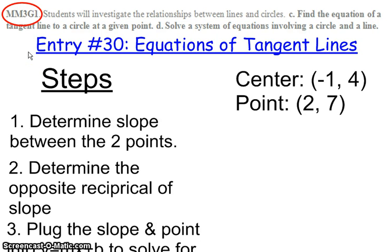All right, for today's video, we are talking about how to find equations of tangent lines of circles. Our standard we're working on today is MM3G1. In particular, we're working on parts C and D. We're finding equations of tangent lines to the circles at a point, and we're talking about how to solve a system of equations involving a circle and a line. Now, I know this one says entry 30. Yours may be a little bit different. It just kind of depends on where we are in your notebook at the time.